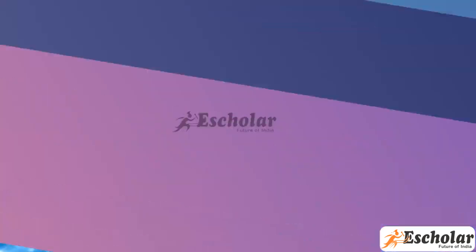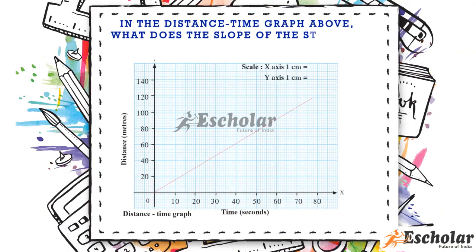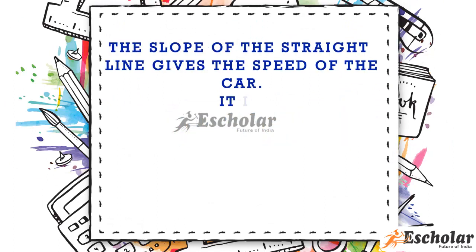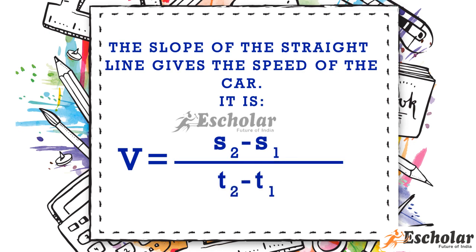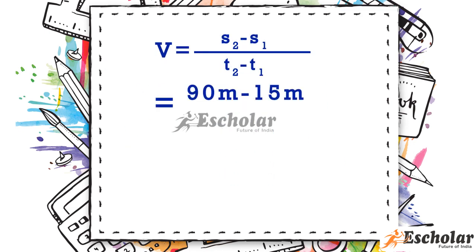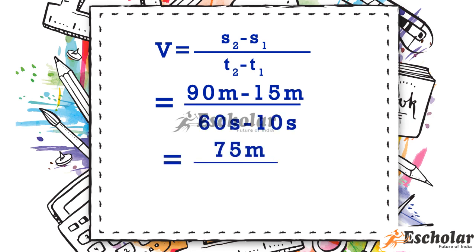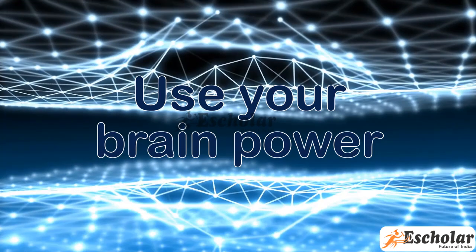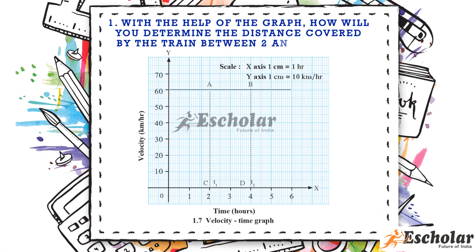Use your brain power: In the distance-time graph above, what does the slope of the straight line indicate? The slope of the straight line gives the speed of the car. It is v = (s2 - s1) / (t2 - t1) = (90 m - 15 m) / (60 s - 10 s) = 75 m / 50 s = 1.5 m/s.